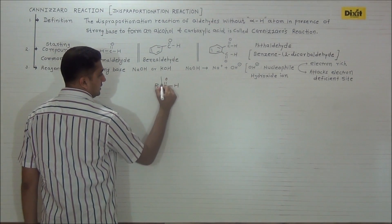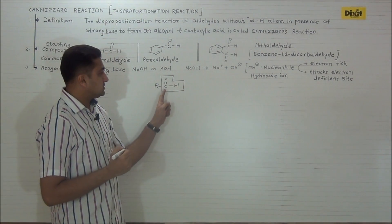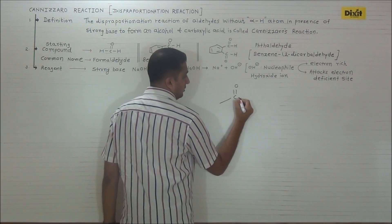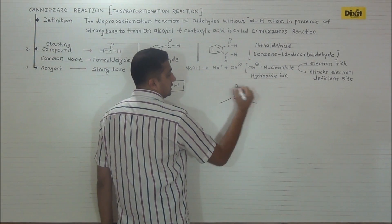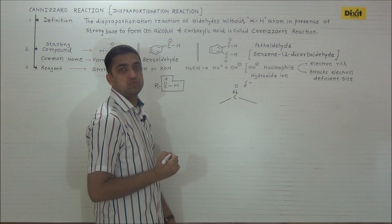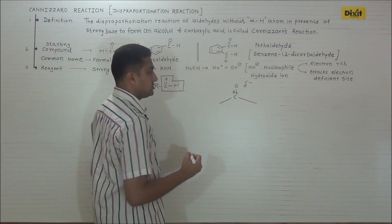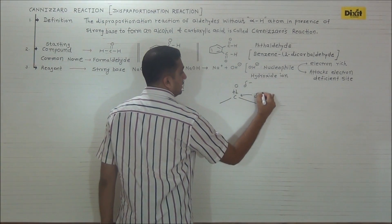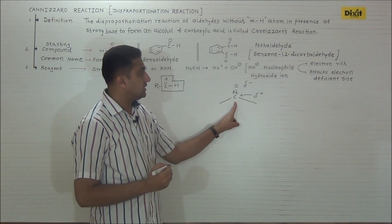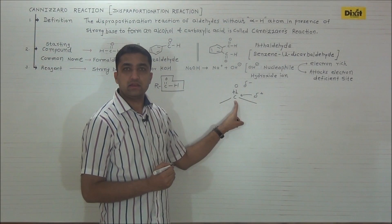Consider an aldehyde — aldehydes are represented as R-CHO. In carbonyl group, carbon is doubly bonded to oxygen. As oxygen is electronegative, it has the tendency to pull the shared pair of electrons towards itself, so the carbonyl group becomes polar. A delta negative charge develops on oxygen and delta positive charge develops on carbon. This carbon becomes electron deficient, so the nucleophile attacks on the carbonyl carbon and propagates the reaction.